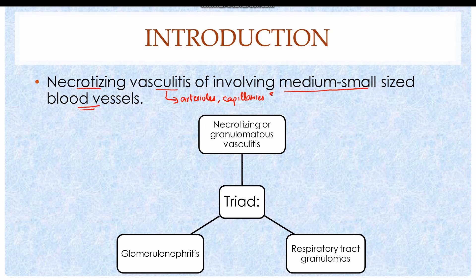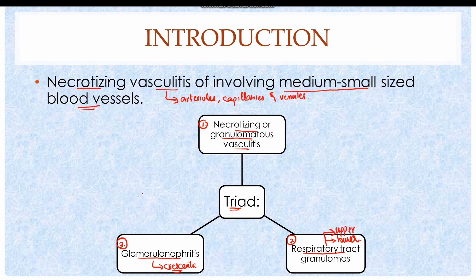Wegener's Granulomatosis is characterized by a typical triad: first, necrotizing or granulomatous vasculitis; second, acute necrotizing granulomas of the respiratory tract, which includes both upper and lower respiratory tract; and third, focal necrotizing glomerulonephritis of a crescentic nature.